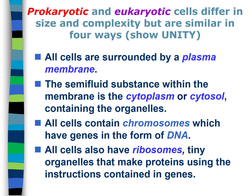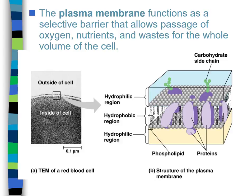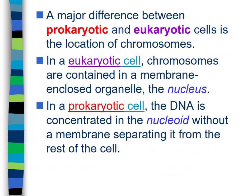The plasma membrane acts as a selective barrier allowing the passage of oxygen and nutrients into the cell and wastes out. One of the main differences between prokaryotic and eukaryotic cells is that prokaryotic cells do not have a nucleus. Their DNA is in what we call the nucleoid region — just a part of the cell where the DNA is wrapped tightly. In a bacterium the DNA is a single circular chromosome.